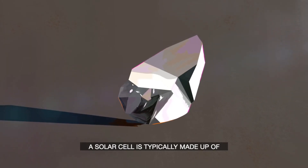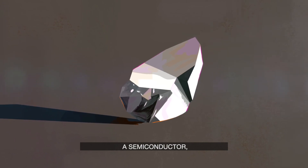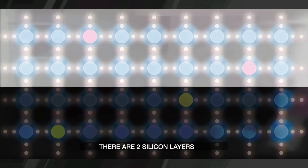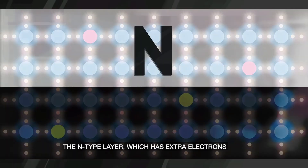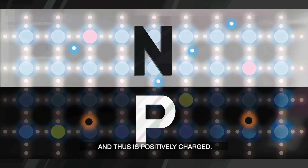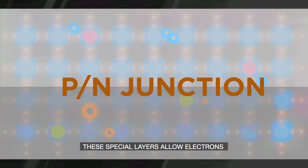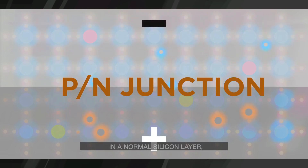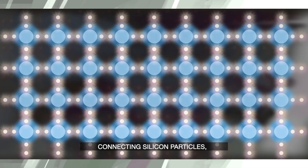A solar cell is typically made up of crystalline silicon, a semiconductor, placed between conductive layers. There are two silicon layers: the N-type layer, which has extra electrons and thus is negatively charged, and the P-type layer, which has extra spaces for electrons called holes, and thus is positively charged. These spatial layers allow electrons to wander across the P-N junction, which they would not be able to do in a normal silicon layer, due to the four strong covalent bonds connecting silicon particles, which prevent freely moving electrons.